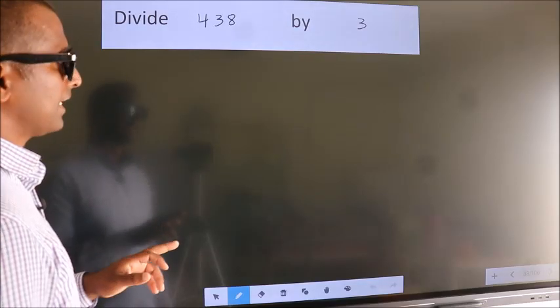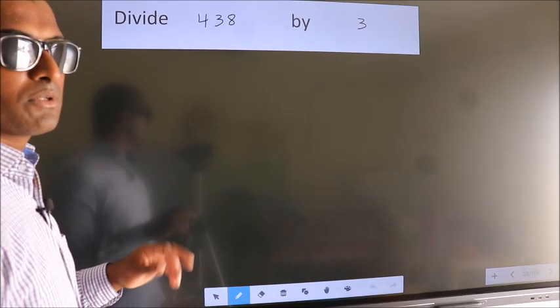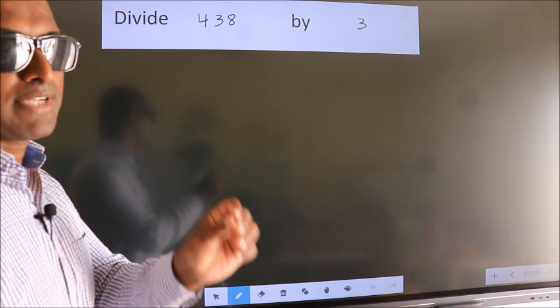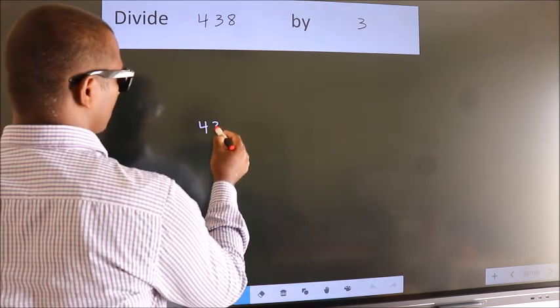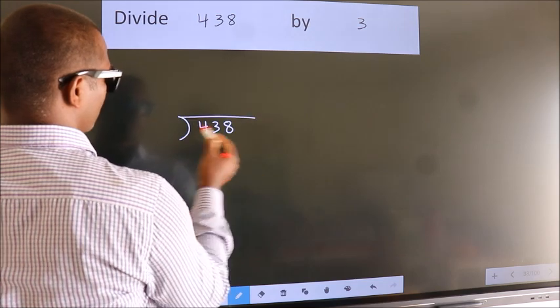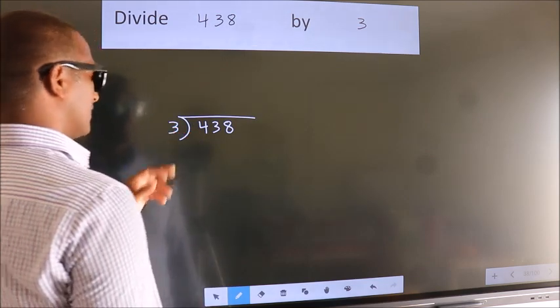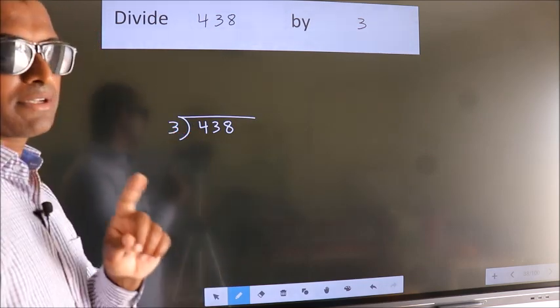Divide 438 by 3. To do this division, we should frame it in this way. 438 here, 3 here. This is your step 1.